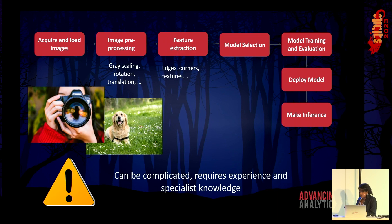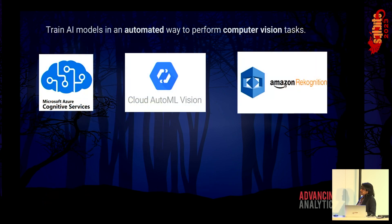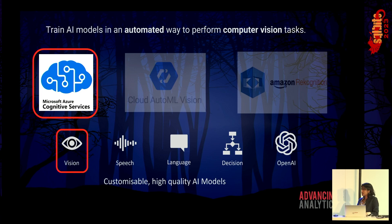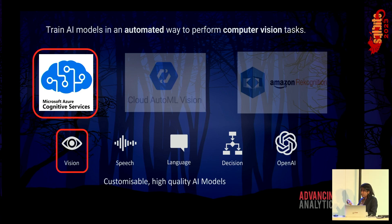What we're going to do today is do this in an automated way. Computer vision is gaining a lot of traction in many verticals and industries. All the big cloud vendors — Amazon, Google, Azure — offer capabilities for computer vision in an automated way. Today we're going to look at Azure Cognitive Services. There was a great talk yesterday on cognitive services, but I'm going to focus just on the vision aspect provided within cognitive services.